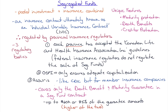Let's begin our review of segregated funds. Take everything you know about pooled investments — all the benefits — and now add an insurance contract to that. Combine the two and you have a segregated fund. Ultimately it is an insurance contract known as an individual variable insurance contract, and since an insurance company is a party to the contract, it is regulated by provincial insurance regulators.